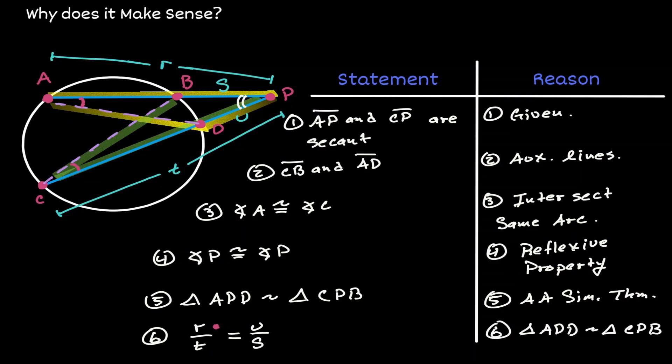If we cross multiply, we get R times S, and that's going to be equal to T times U, which is the result we wanted to show.